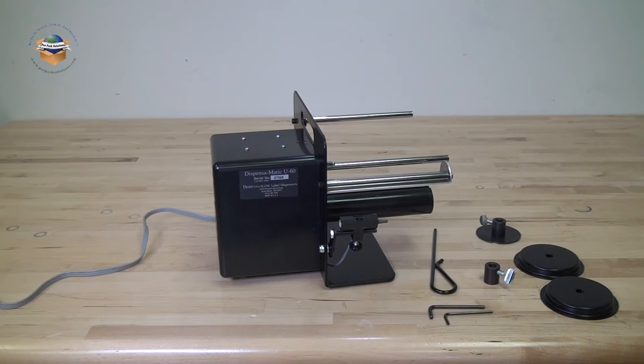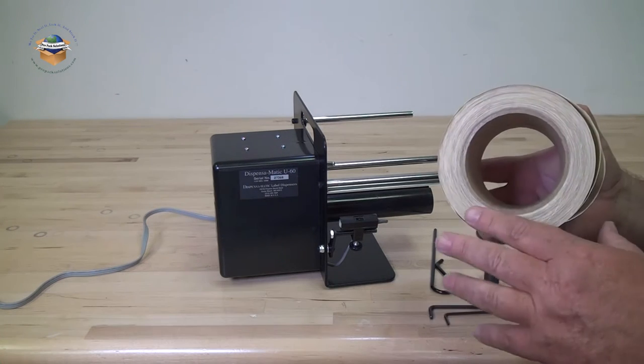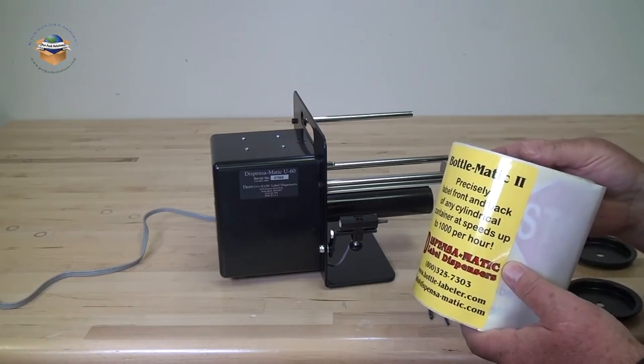To load the machine, make sure the unit is shut off. Make sure your core runs from side to side on your roll of labels.